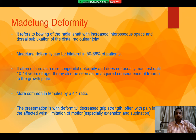Merlung Deformity refers to the bowing of the radial shaft with increased interosseous space and dorsal subluxation of the distal radial joint. Merlung Deformity can be bilateral in 50 to 66% of patients. It often occurs as a rare congenital deformity and does not usually manifest until 10 to 14 years of age.